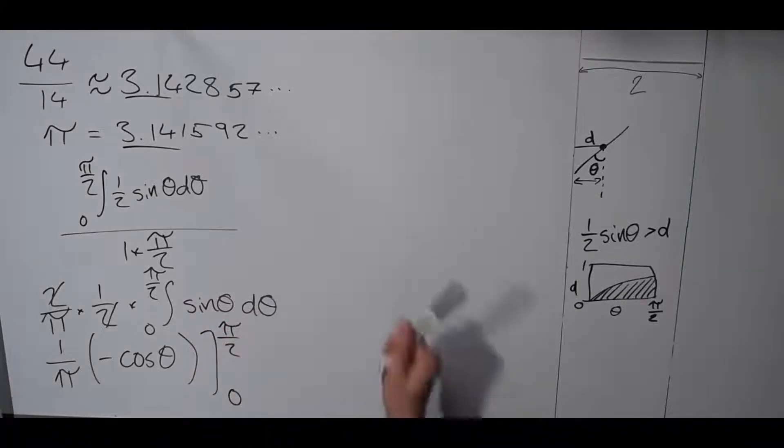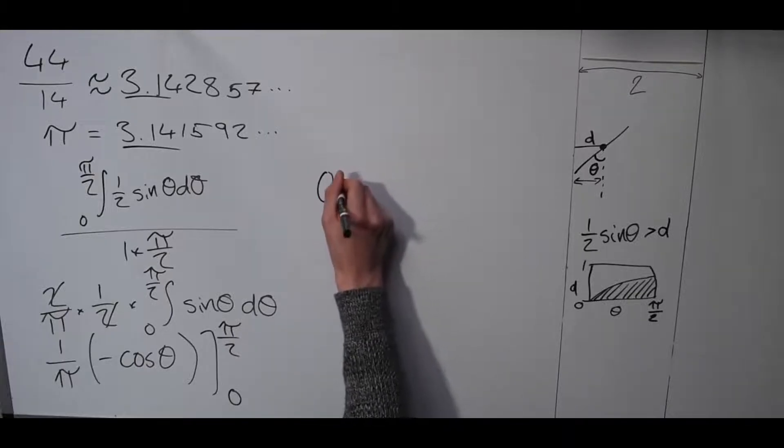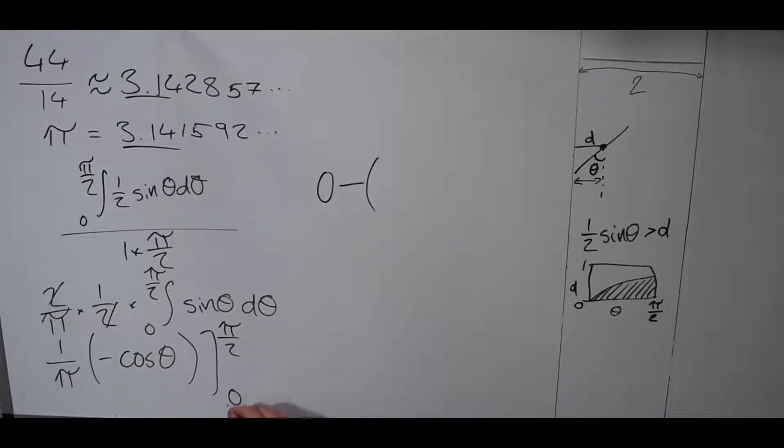Plug in pi over two, cosine of pi over two is just zero, and then minus, plug in zero, cosine of zero is one.